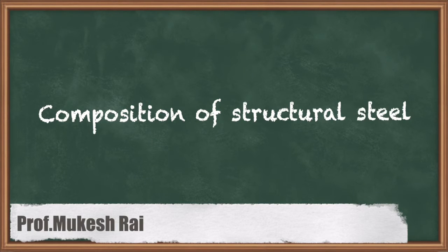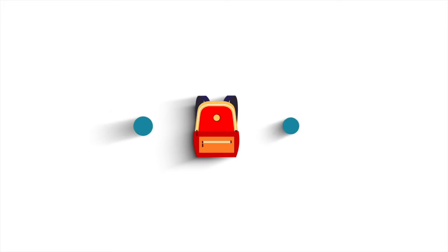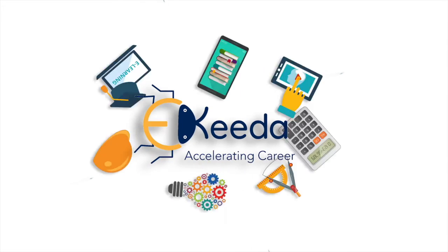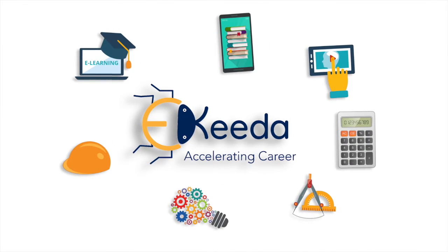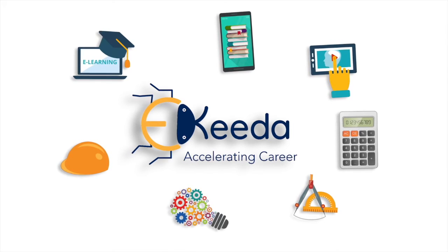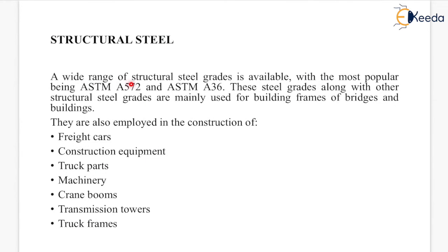Hello students, today we are going to study the composition of structural steel. A wide range of structural steel grades is available, with the most popular being ASTM A572 and ASTM A36. These steel grades, along with other structural steel grades, are mainly used for building frames, bridges and buildings.